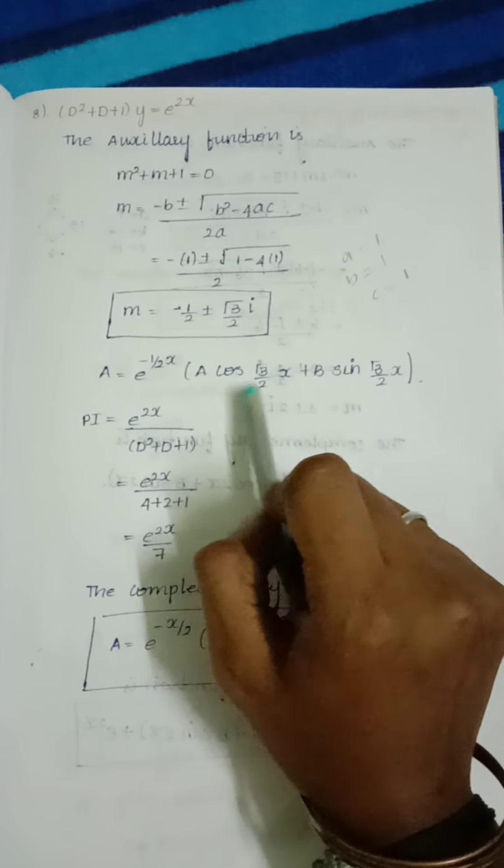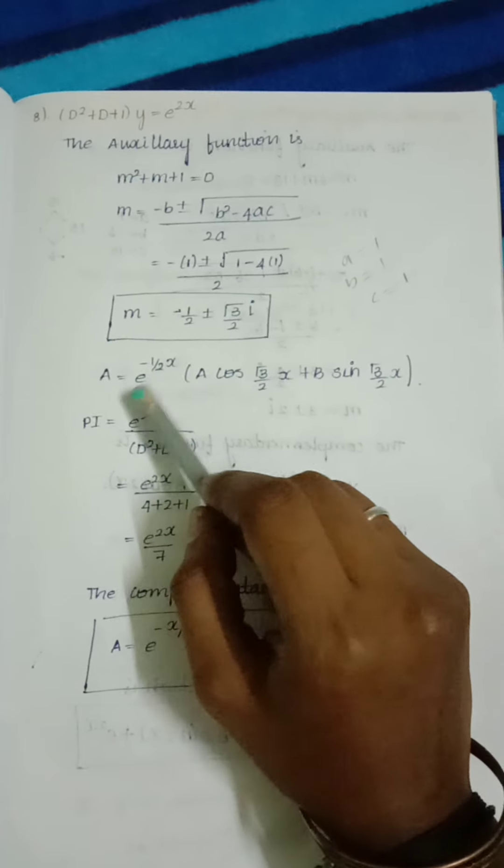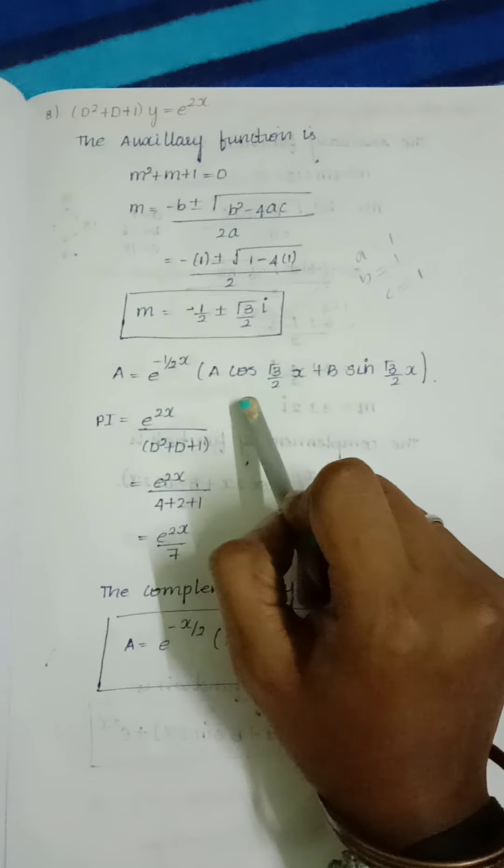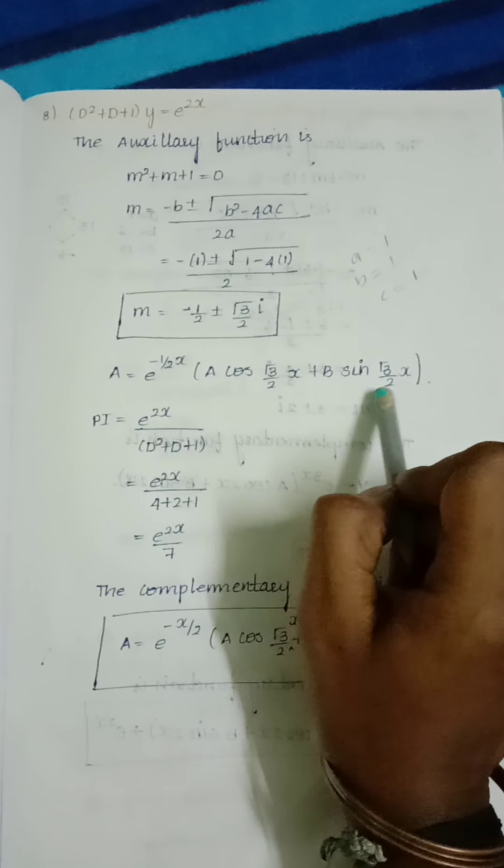If we substitute these values, we get e^(-x/2) times (a cos(√3/2 x) + b sin(√3/2 x)). This is the complementary function.